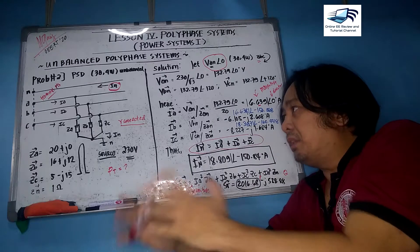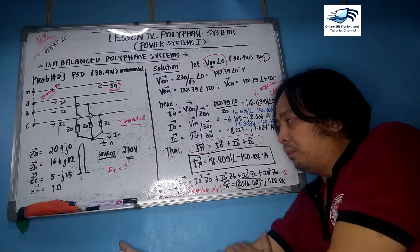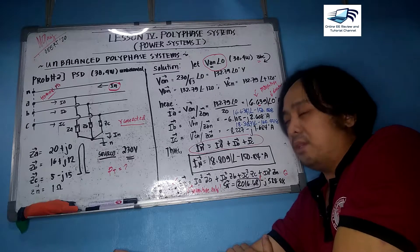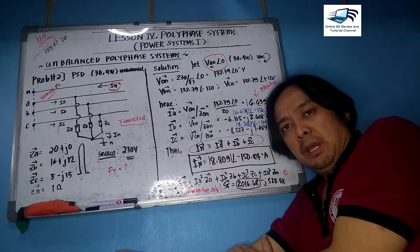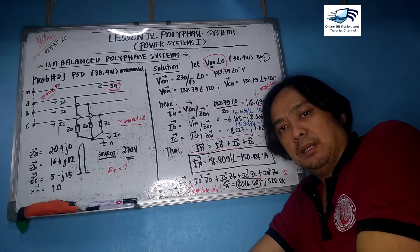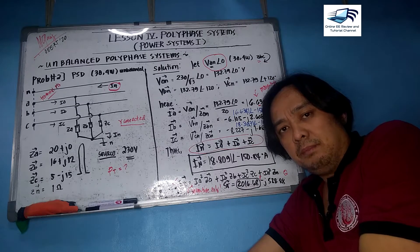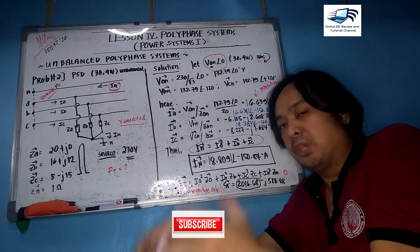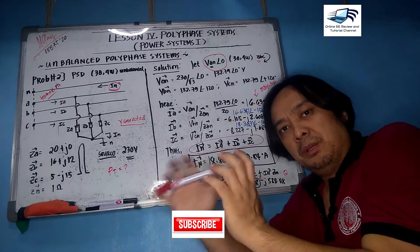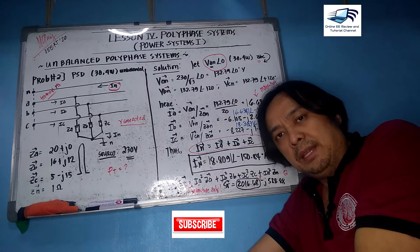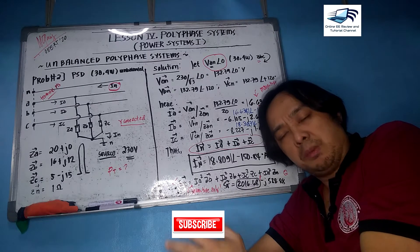This concludes the problem solving coverage for unbalanced polyphase systems. The next topic will be the two-wattmeter method and wattmeter applications for balanced and unbalanced polyphase systems. Thank you to all who have subscribed to the channel.